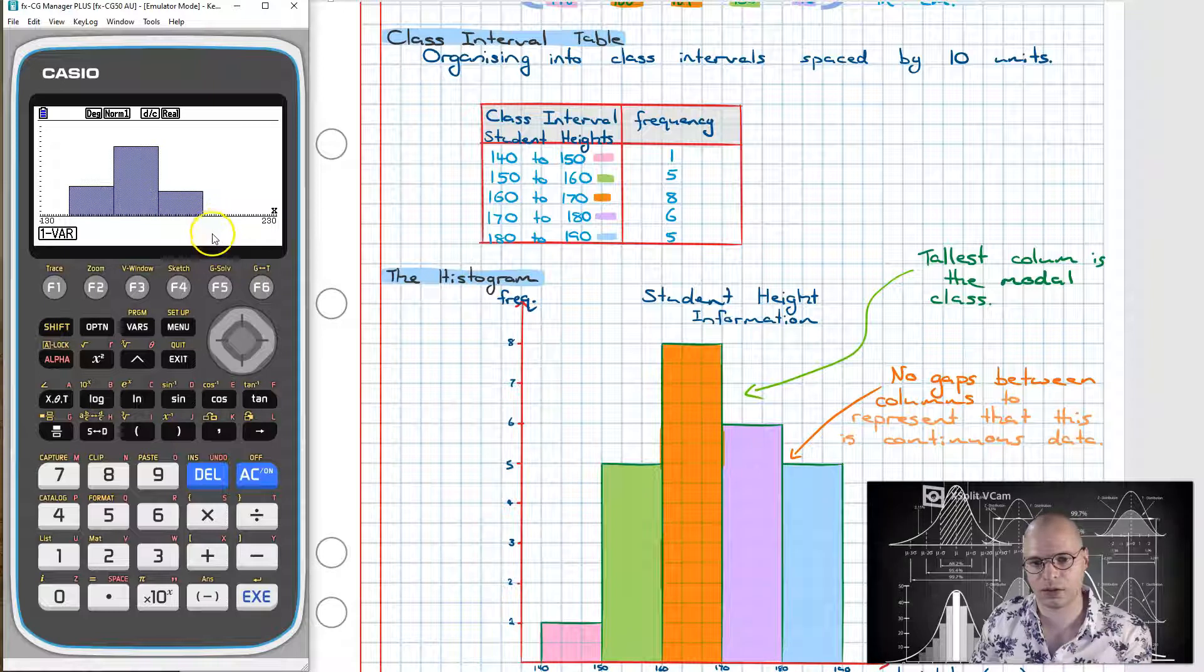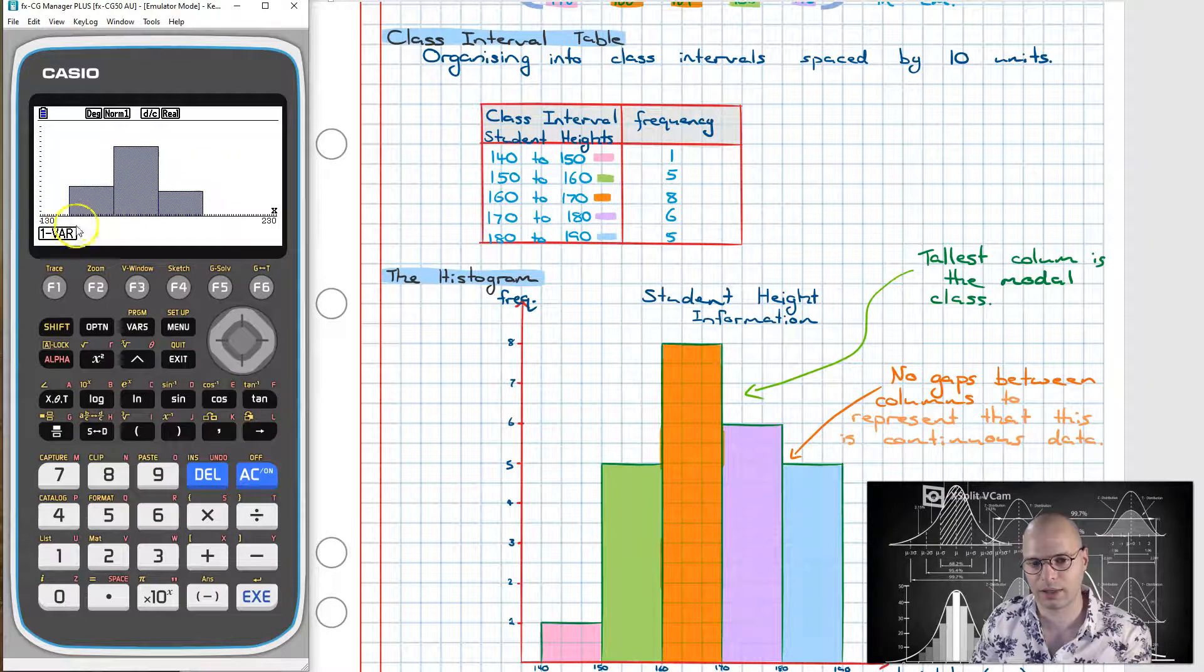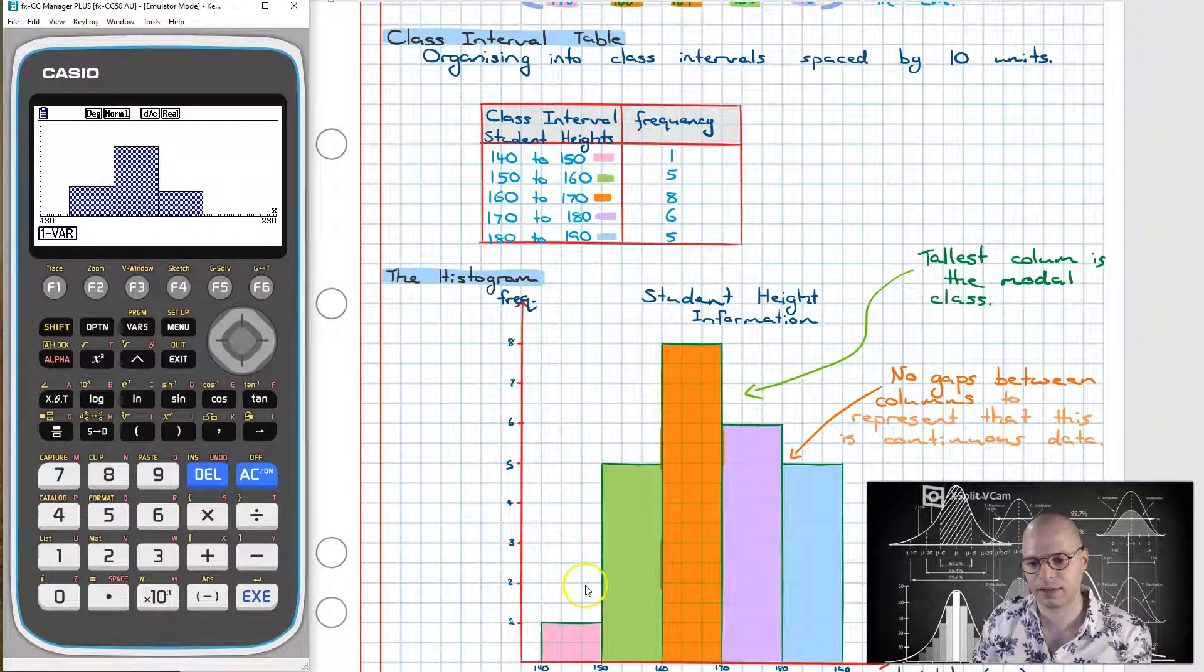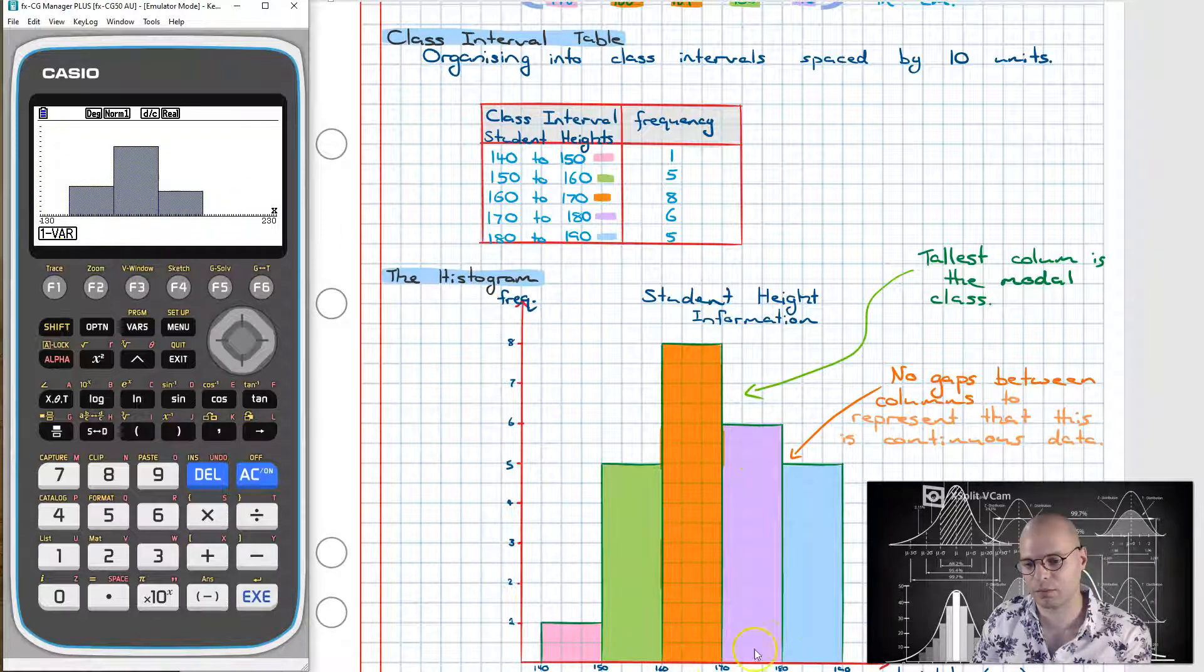So basically what you want to do is you want to organize your data in such a way that it's meaningful to read. So you can use your calculator to first graph it easily and then based on what you think is the most suitable way to represent the data you can then draw it down manually like so.